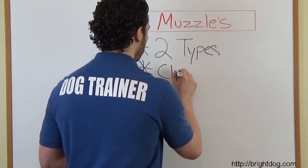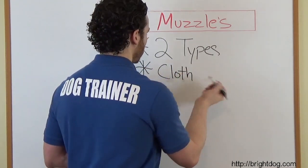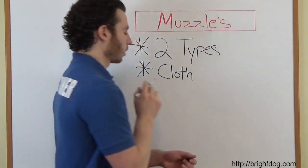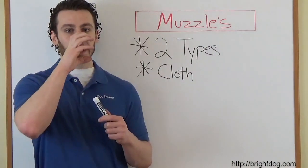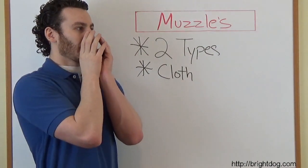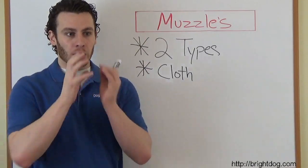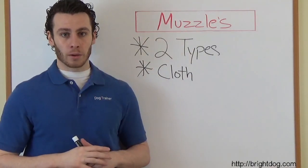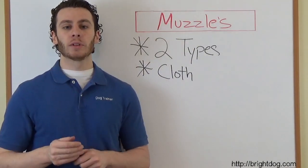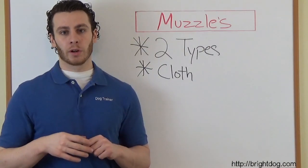So the first ones are the cloth muzzles that you see, or the nylon muzzles. The cloth ones are very tight. The dog can't open his mouth at all, can't pant. It completely closes the dog's mouth, and these should only be used for short periods of time.